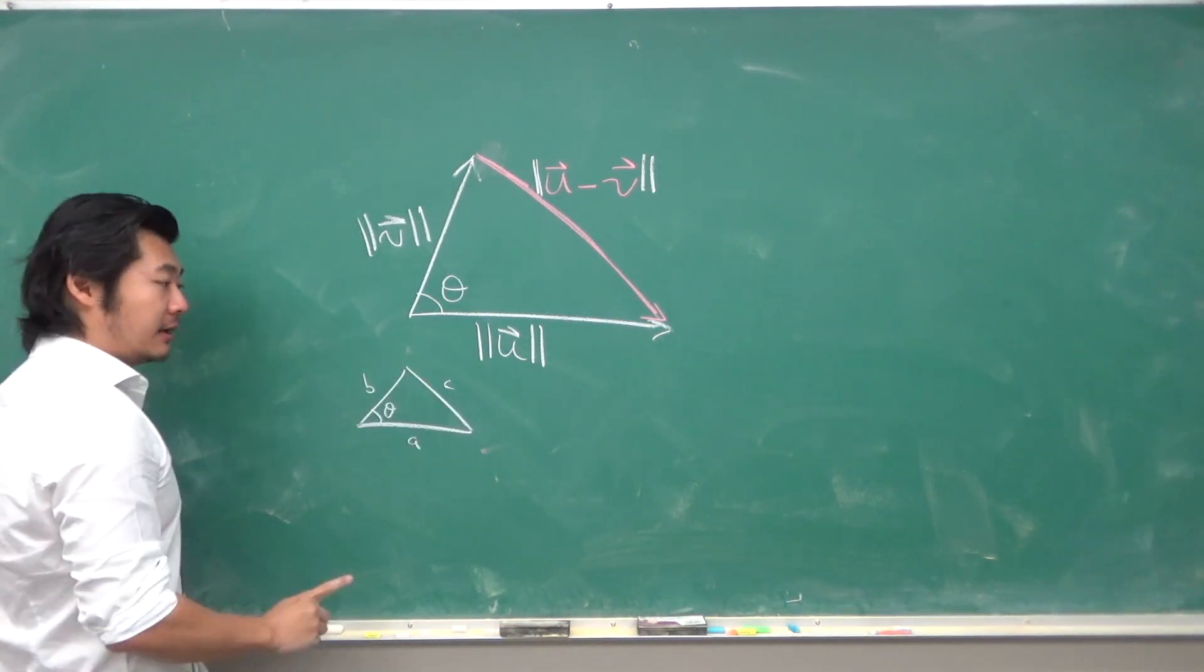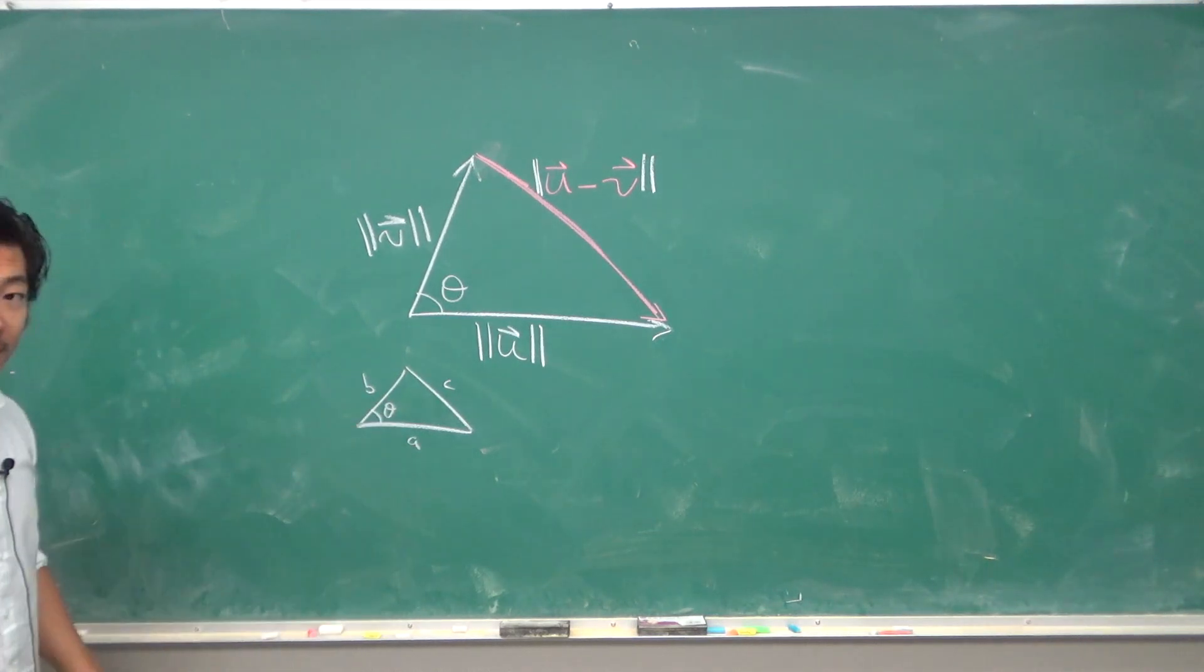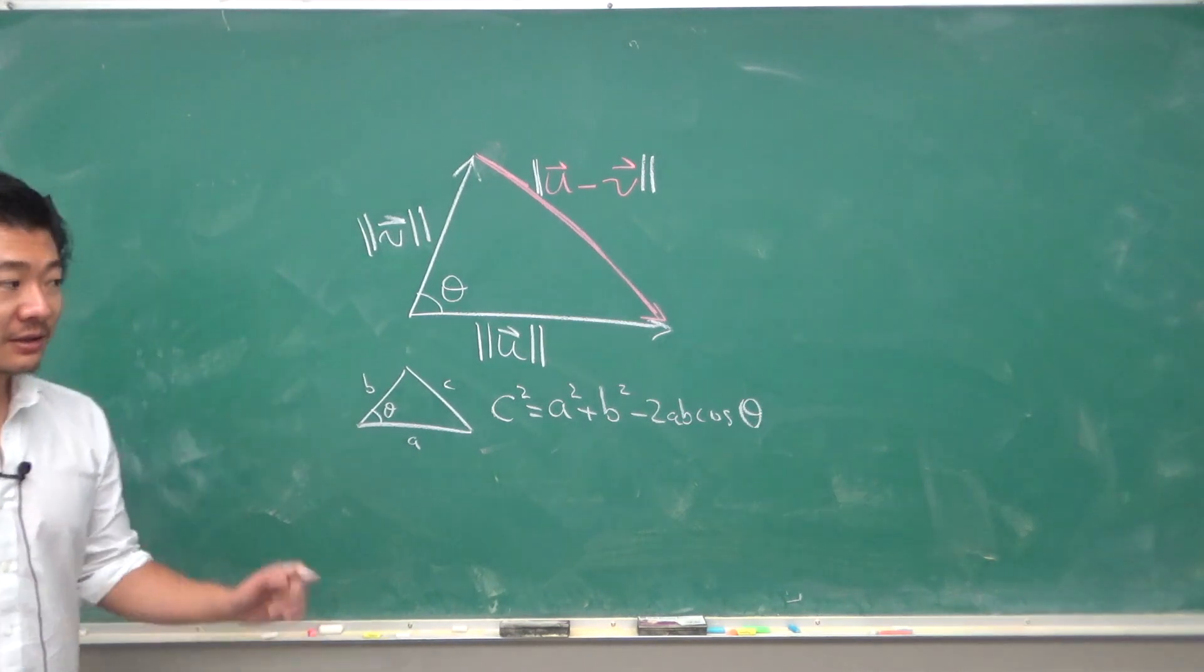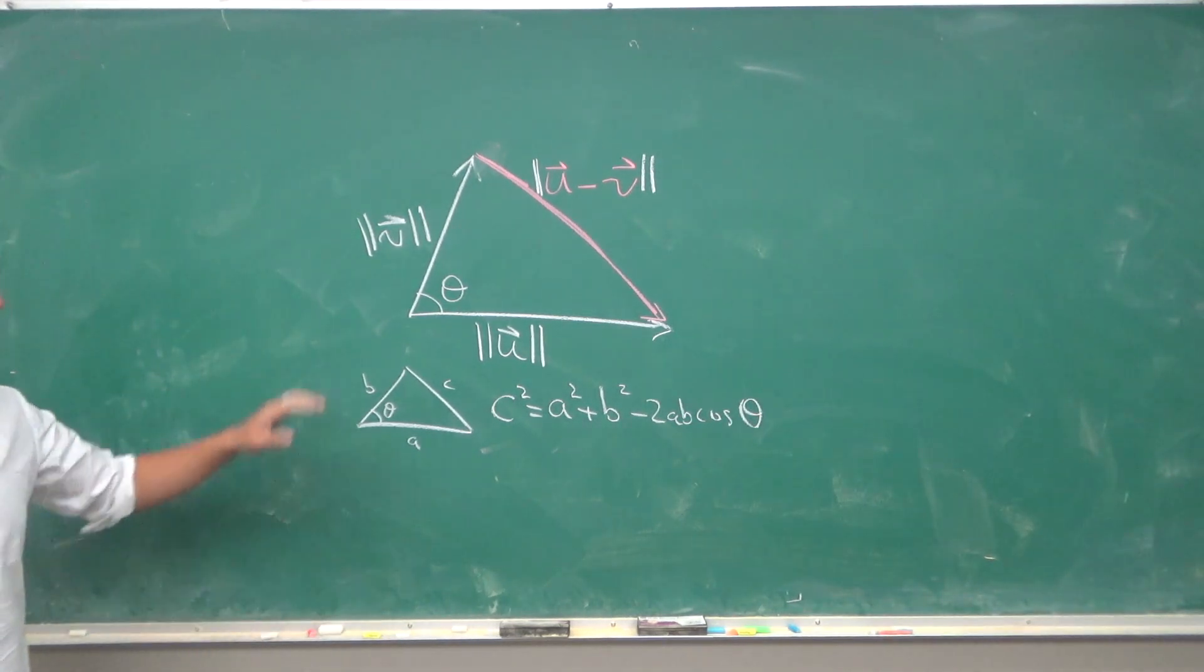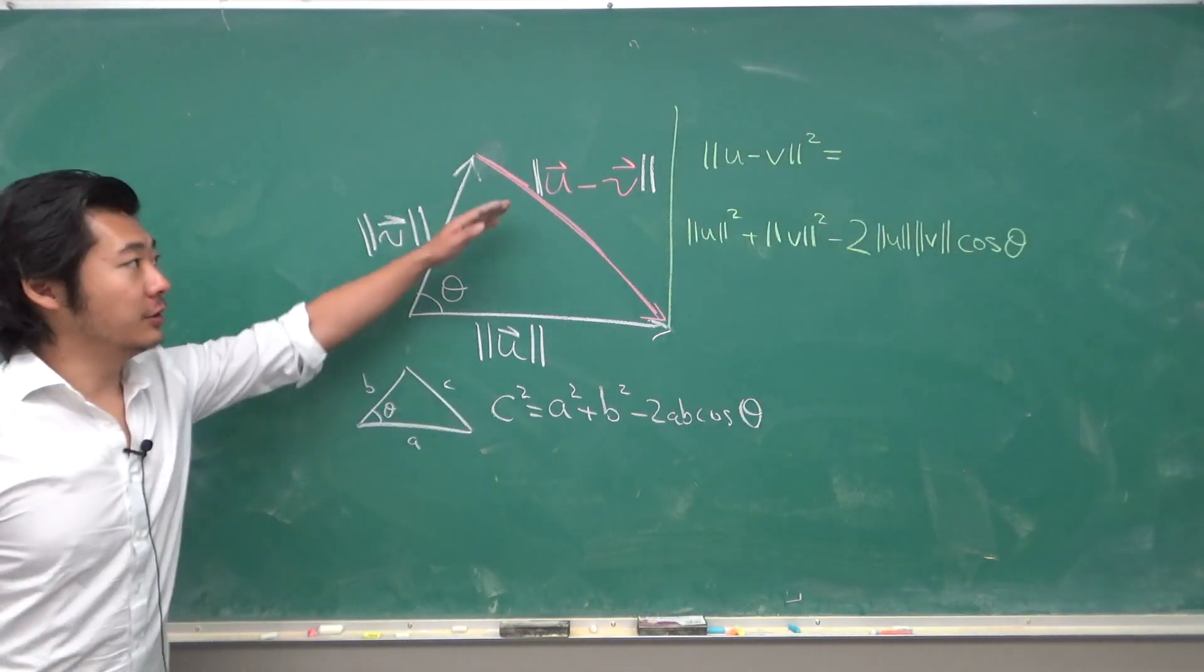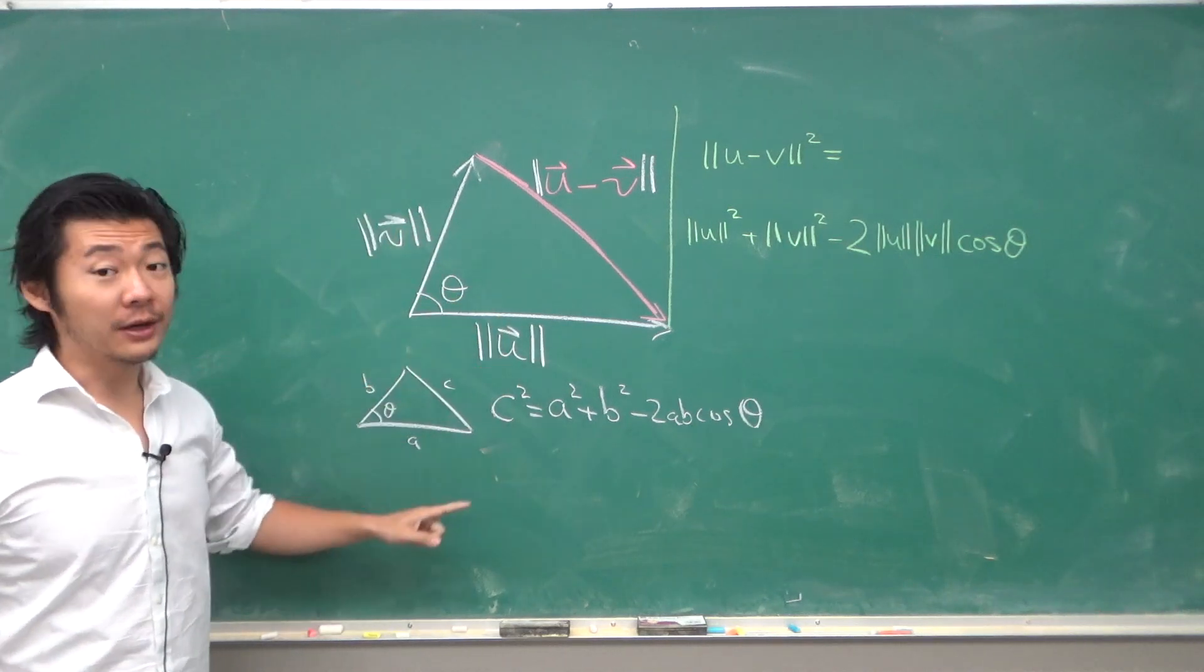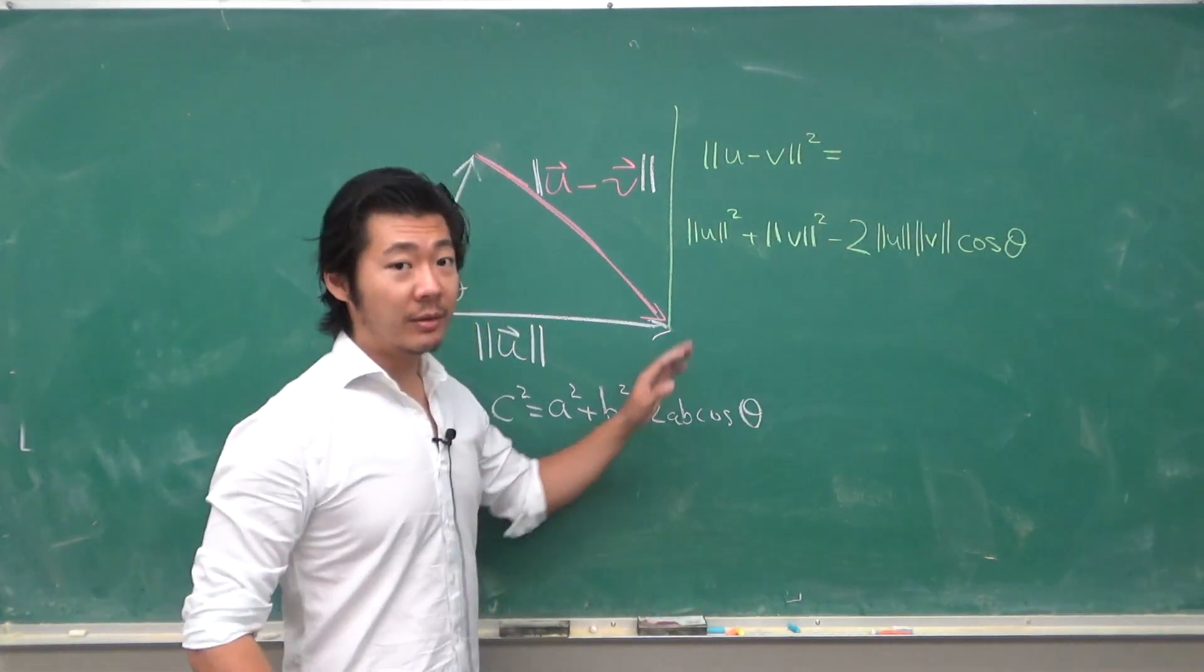The law of cosines is the three sides of this triangle and the angle between these two has the relation. C square equals A square plus B square minus 2AB cosine theta. So in terms of these vector lengths, if we rewrite the law of cosines, this will be U minus V square equals U square plus V square minus 2UV cosine theta.